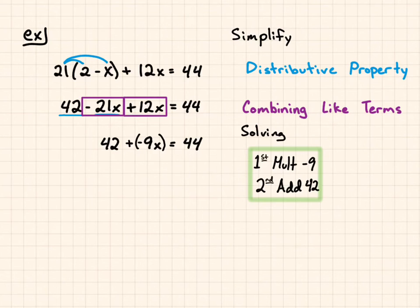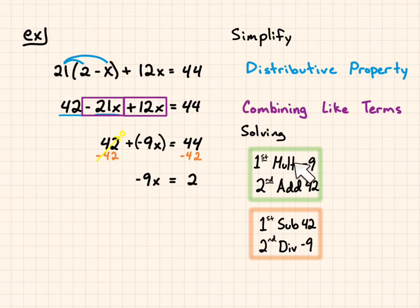So when I do my inverse operations, first I'm going to subtract 42 from both sides. 42 minus 42 goes to 0, and then negative 9x equals 2. I'm going to divide both sides by negative 9 because that was the opposite of multiplying by negative 9. And I end up with x equals negative 2 ninths, which is a perfectly fine answer for x. The easier way would be to plug it in here. Negative 2 ninths times negative 9 is just positive 2, and 42 plus 2 does give me 44.